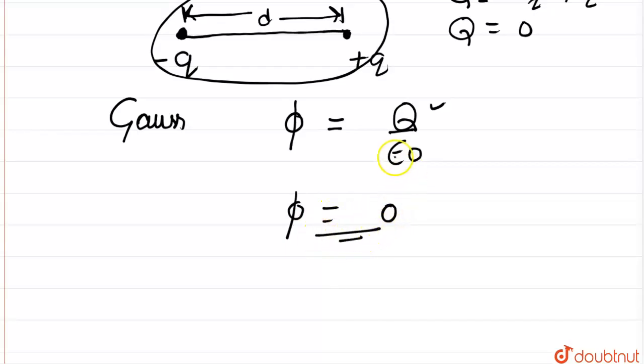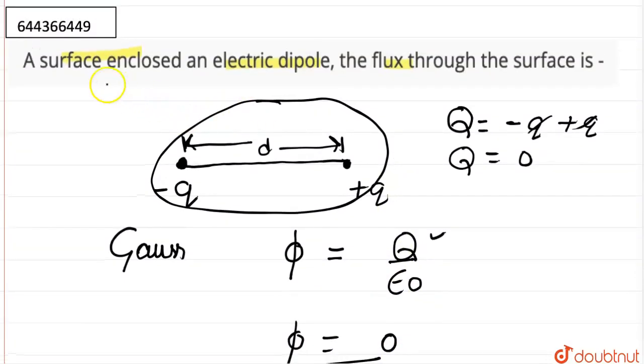So this is our answer. So when a surface encloses an electric dipole, the flux will always be zero because of the zero charge. Thank you.